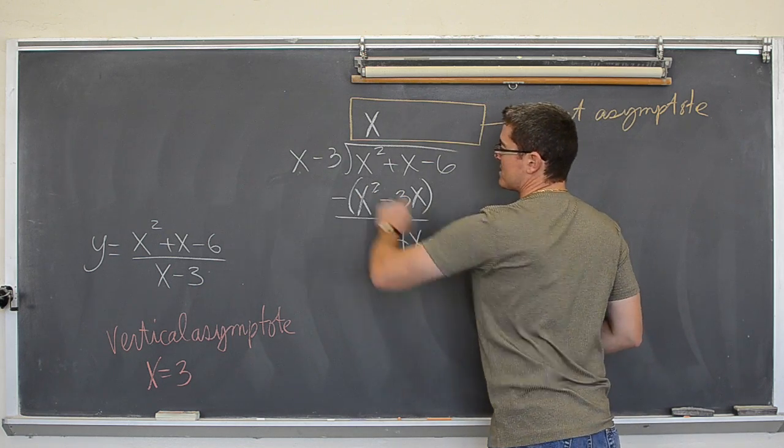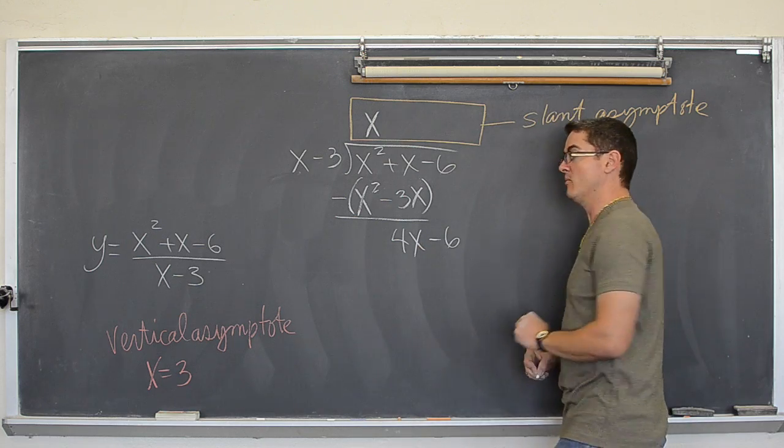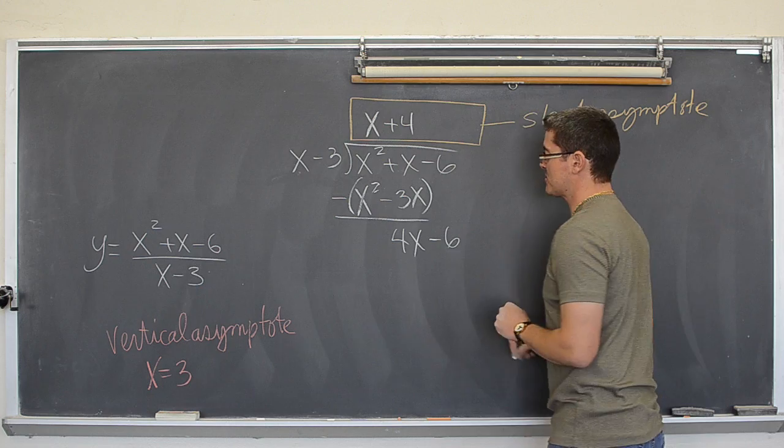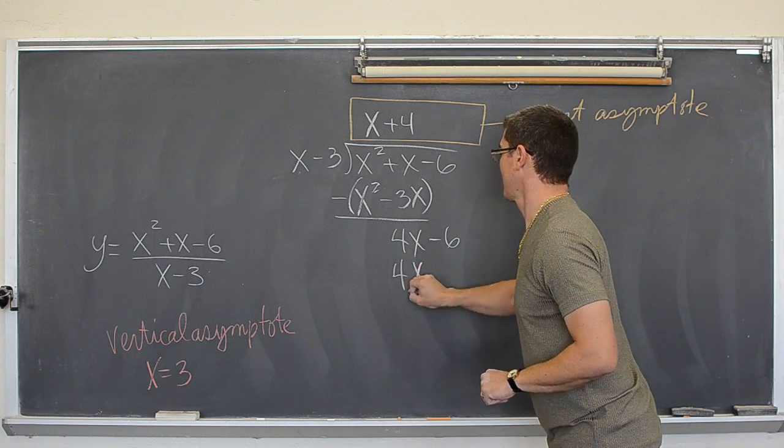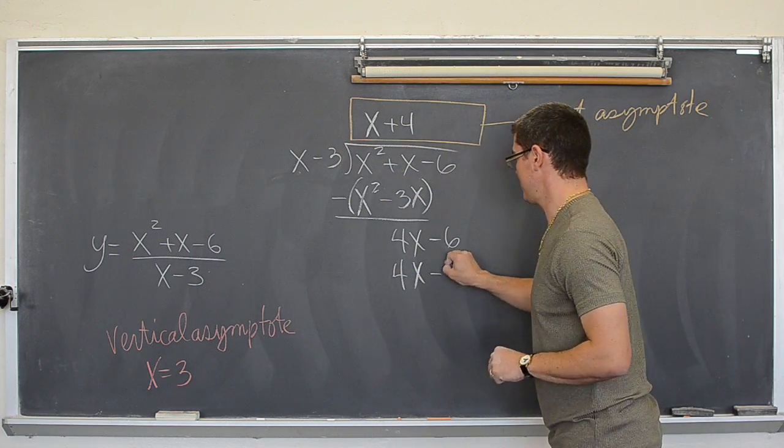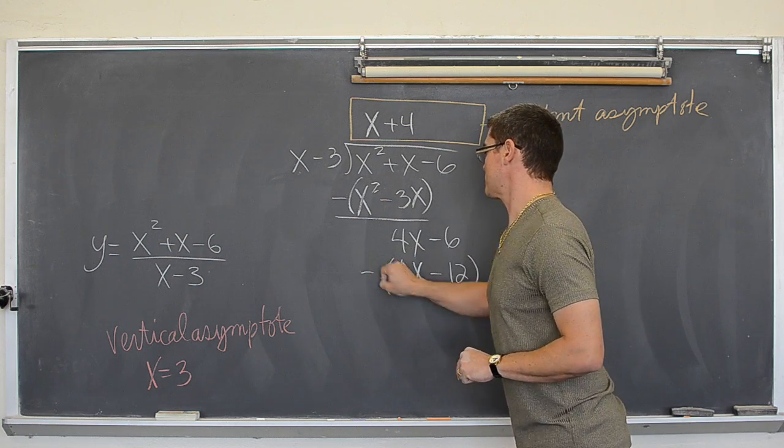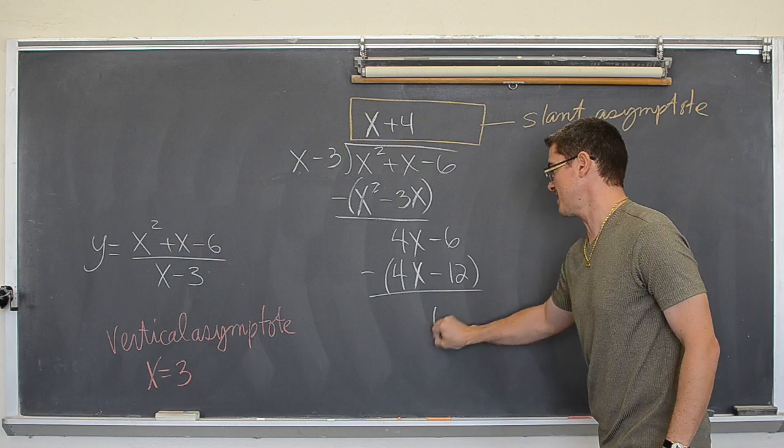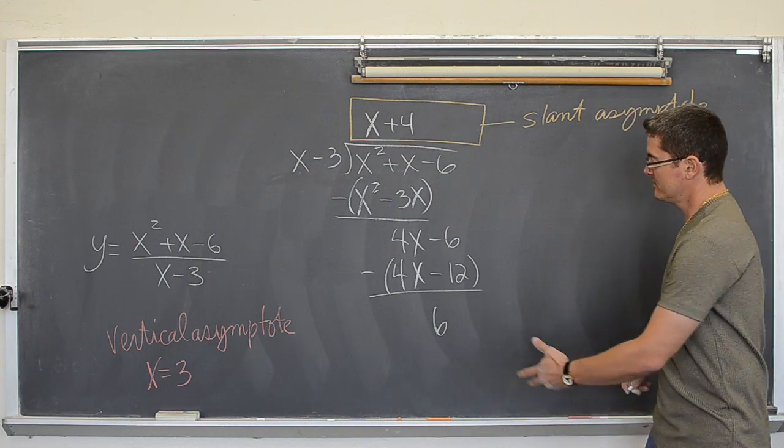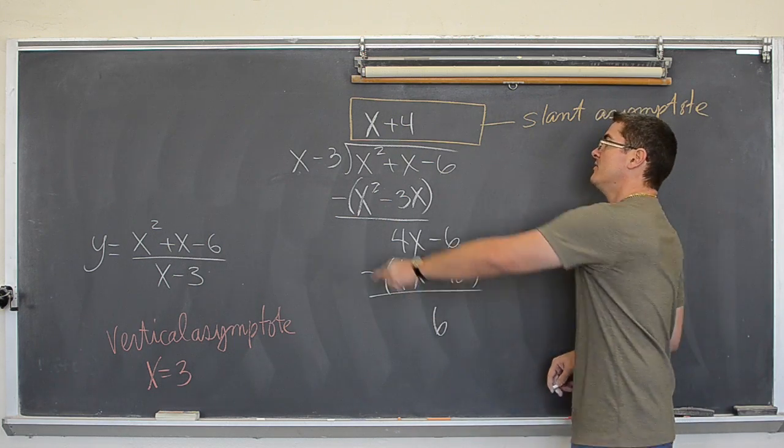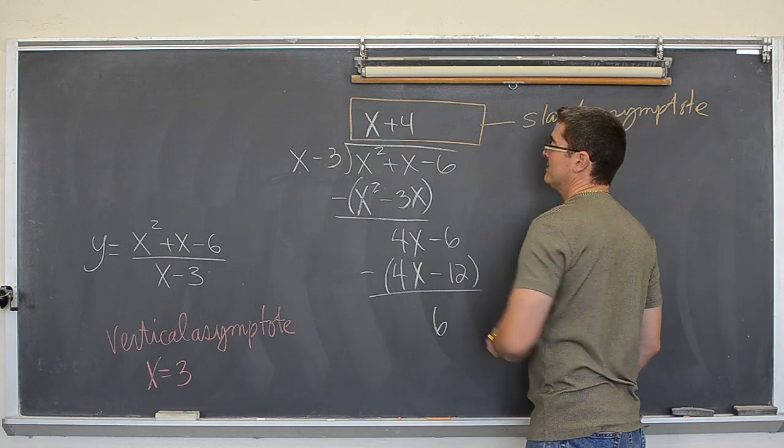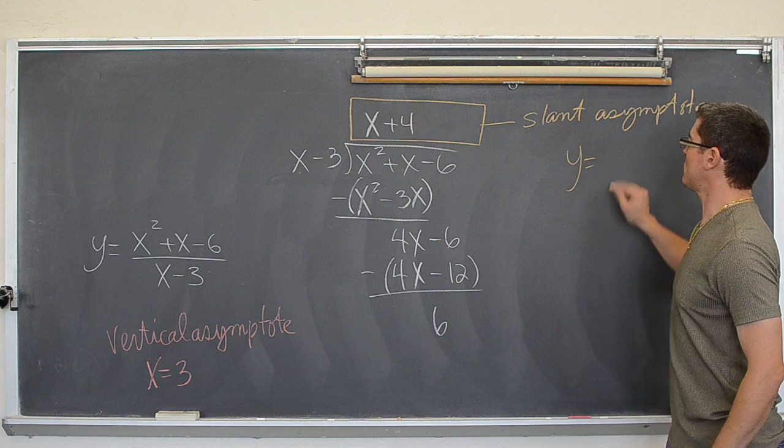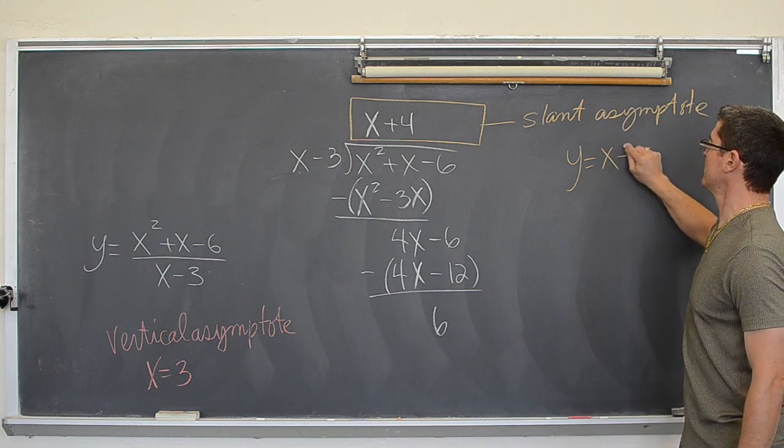How do I get this leading term to equal this leading term? Well, I am going to multiply it by 4. So 4 times x is 4x. And 4 times negative 3 is negative 12. I am going to go ahead and subtract that and get 0, negative 6 plus 12 is 6. There is a remainder there, but this is really what I am concerned with. We are going to have a slant asymptote of y equals x plus 4.